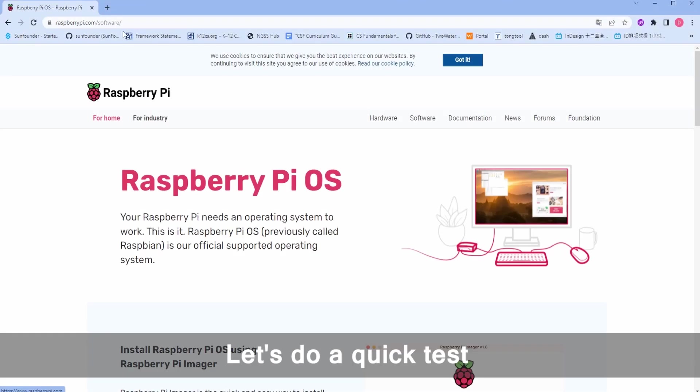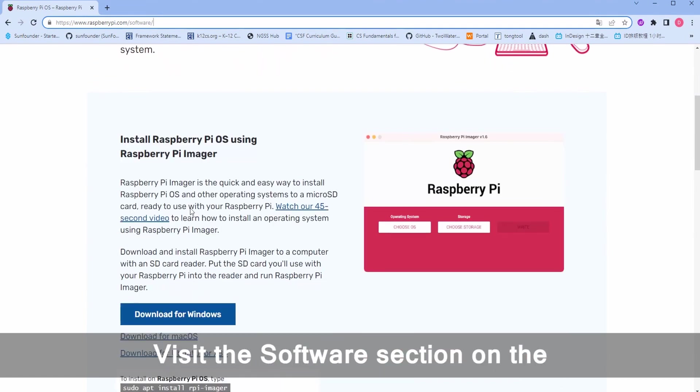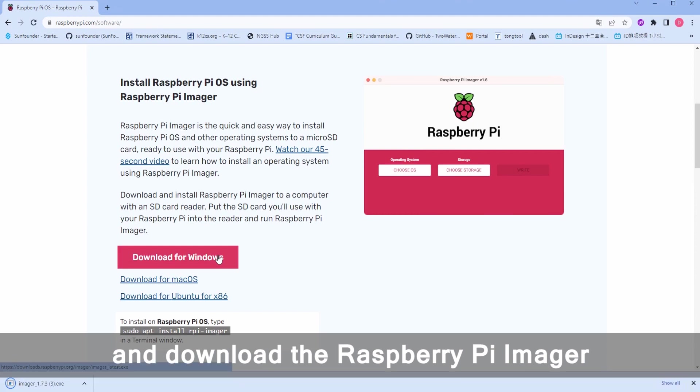Let's do a quick test to confirm everything's set up correctly. First, load the Raspberry Pi OS onto the SD card. Visit the software section on the Raspberry Pi official website, and download the Raspberry Pi imager.